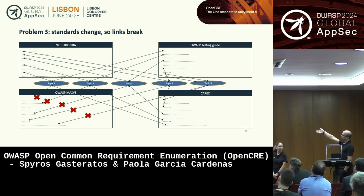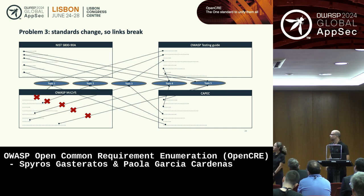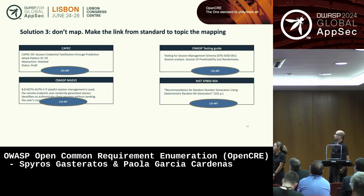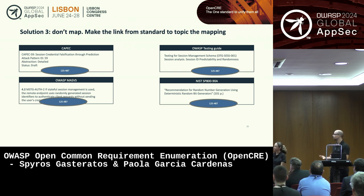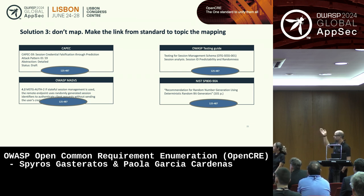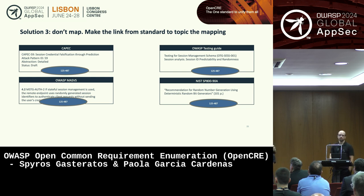Which leads us to our third problem: standards change, so links break. How many times have you clicked on a document link and ended up on a 404 page because things broke? We solve this by trying to abandon mappings. We try to convince standards writers to link back to us, and then we take a Google model where we detect links back to us, write parsers, and generate those links to populate our databases dynamically. Testing Guide has done that, ASVS has done that, SAM has done that, WrongSecrets has done that, and more standards and resource writers do this every day.